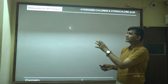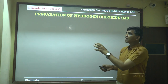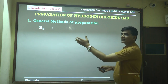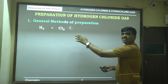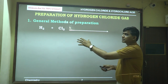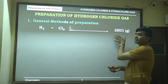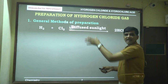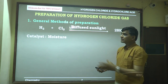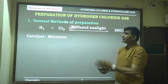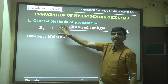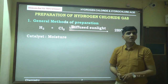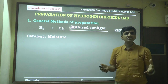The first important topic is the general method of preparation of hydrogen chloride. Hydrogen gas, which is a colorless odorless gas, combines with chlorine, a greenish-yellow highly poisonous gas, in the presence of diffused sunlight to give HCl gas. This reaction is carried out in diffused sunlight and cannot be done in the dark because the reaction will be too slow, and not in direct sunlight because the reaction will become explosive.